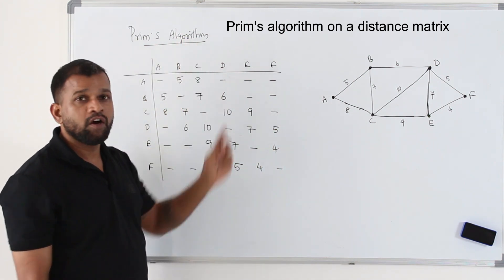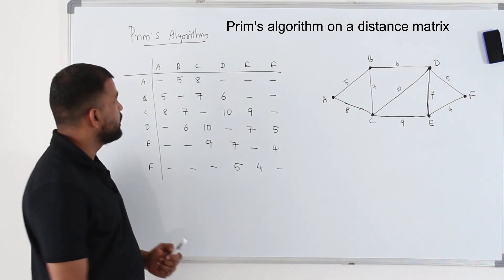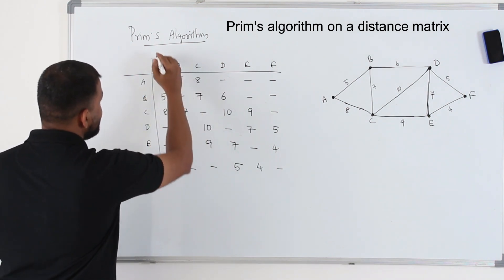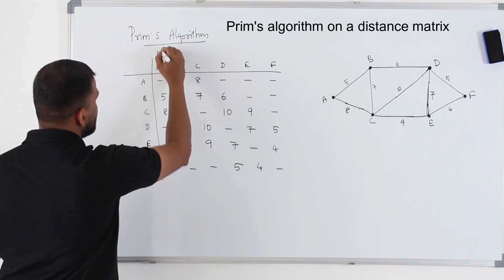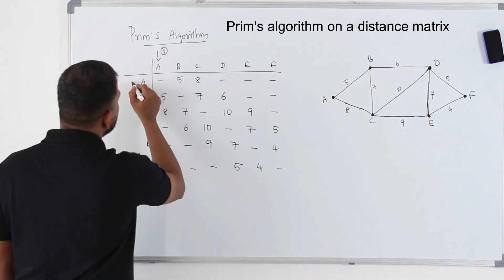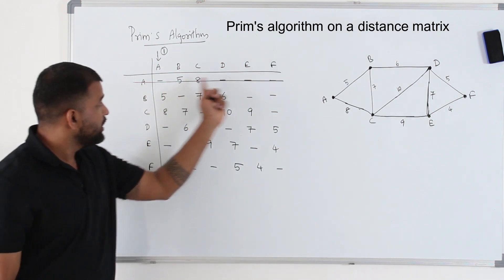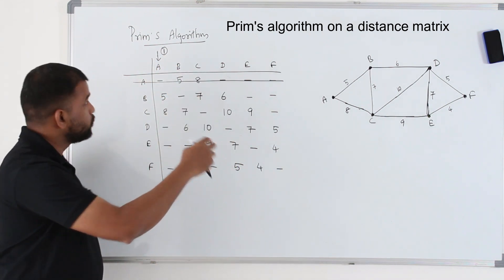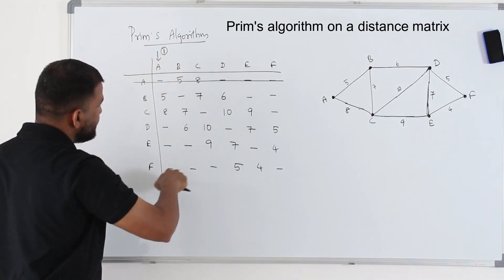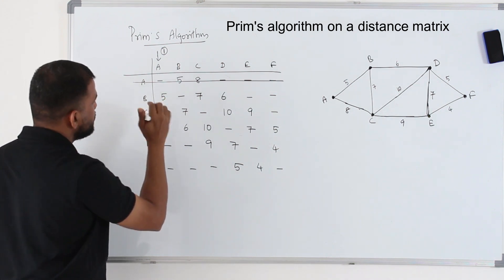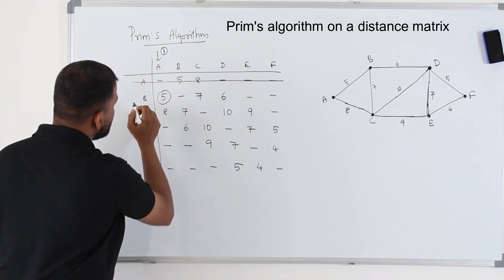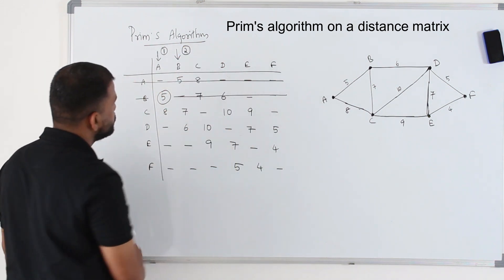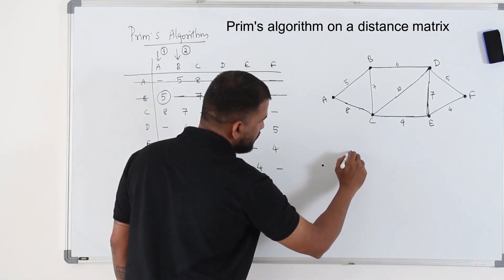Now I'm going to teach you how to apply Prim's algorithm on this distance matrix. Step number one: you have to choose a vertex. I'm going to choose A. Take A and label it as number 1 here. Then delete this row and the column corresponding to the same vertex, and label it as number 1. Step number two: in this column labeled 1, find the least value, which is 5. So take this 5 — we have added B. Delete B's row and label it as number 2. So we already have A and B.